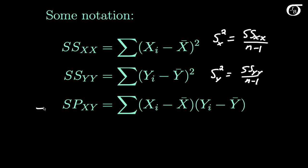And down here we have what we call the sum of products. And the sum of products is equal to this quantity here. And the covariance between X and Y, the sample covariance between X and Y, would be equal to the sum of products of X and Y over n minus 1.